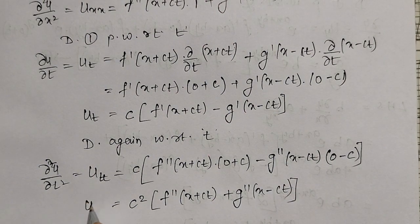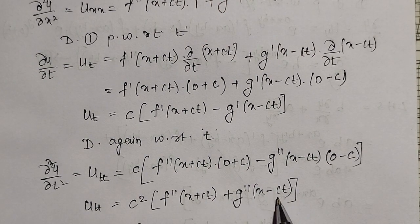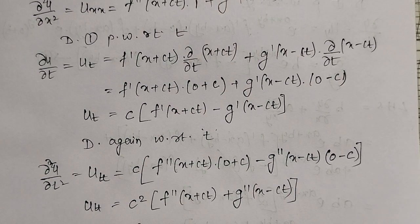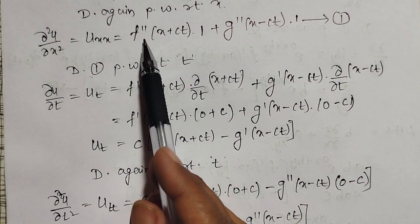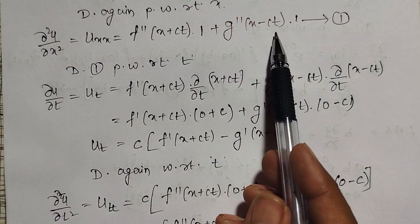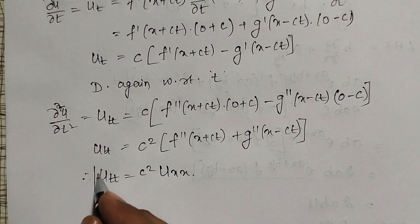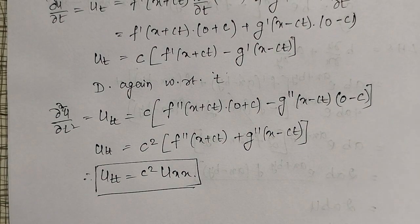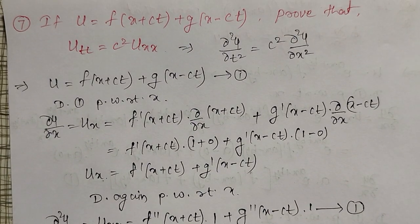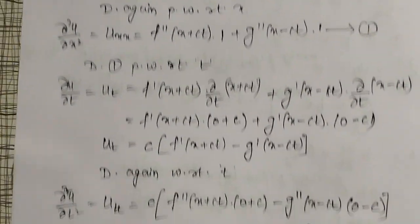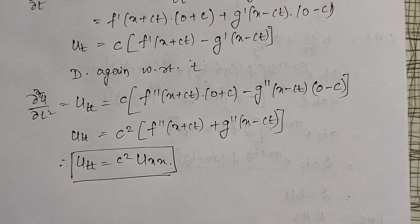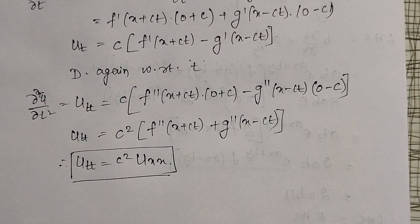This is u_tt. Observing that u_xx = f″(x + ct) + g″(x - ct), which is exactly the bracket in the expression for u_tt, we can replace it to get u_tt = c² · u_xx. This is what we wanted to prove. More examples on partial differentiation will be solved in upcoming videos.